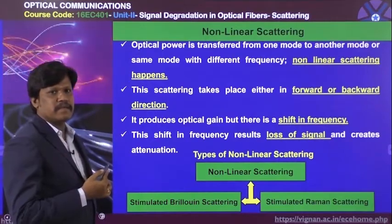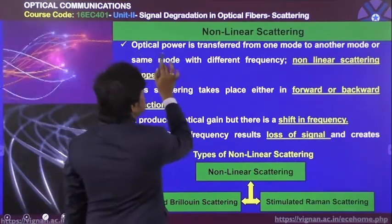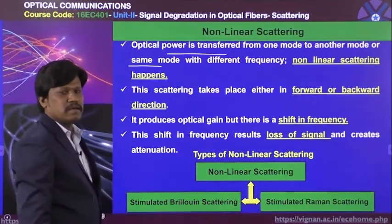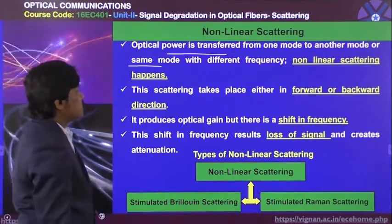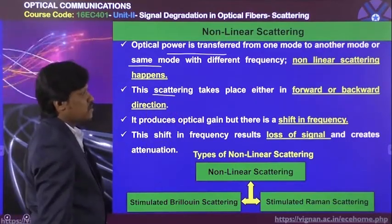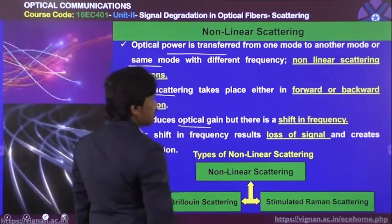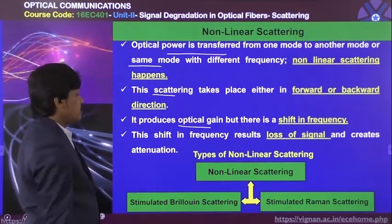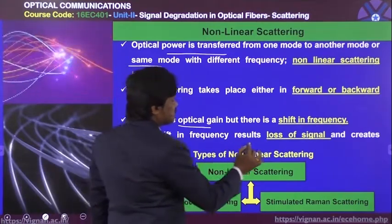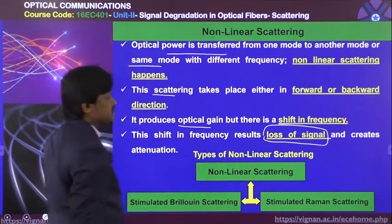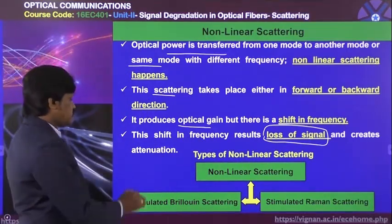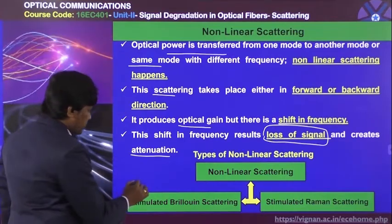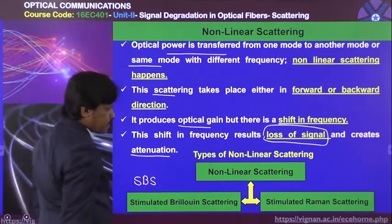Non-linear scattering in optical fiber is due to transfer of optical power from one mode to another mode, or the same mode with a different frequency. This scattering takes place in both forward and backward directions. It produces optical gain, but there will be a shifting of optical frequency. The shifting frequency results in loss of signal and creates attenuation. There are two types of non-linear scattering: stimulated Brillouin scattering and stimulated Raman scattering.